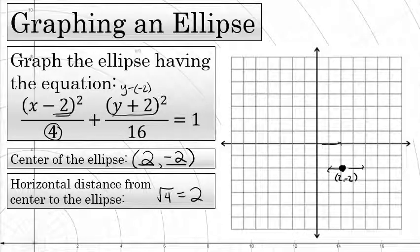So two points that are on the ellipse are from the center, two units to the right, which would be the point 4 negative 2, and the point from the center, two units to the left, 0 negative 2. These two points are actually solutions to the original equation. They are two points on the graph of this ellipse.